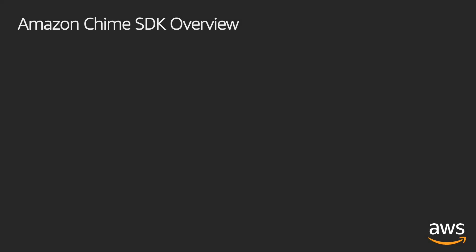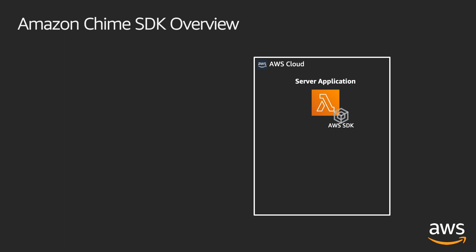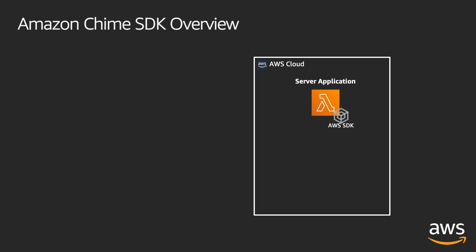The Amazon Chime SDK has two main components. First, the AWS SDK that can be used in server-side applications to create meeting sessions and manage attendees. Second, a JavaScript client SDK that can be embedded in your application to start and join meeting sessions, bind media streams to HTML elements, select media devices, and perform in-meeting actions. The client SDK provides real-time meeting events for audio status, active speaker, signal strength, bandwidth usage, and screen share switches.